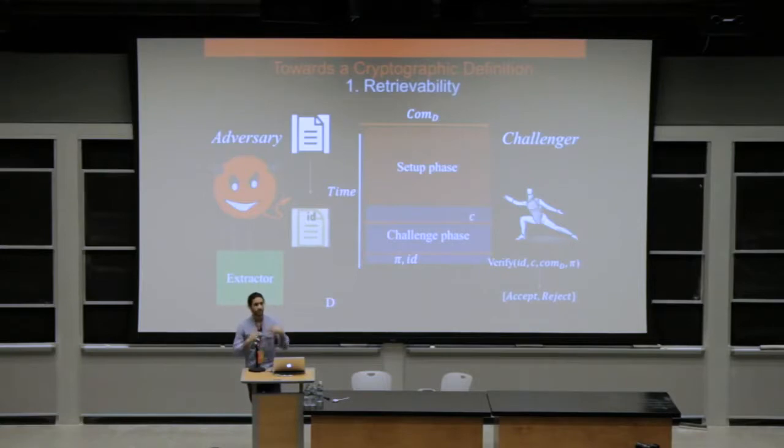If this adversary succeeds in this game, then there's several properties that we want to come out of it. We want to say that any adversary who's able to succeed in convincing the challenger to accept the proof, must be able to extract the original data from whatever it's storing.